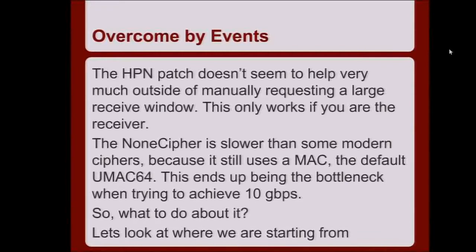However, the HPN patch doesn't help very much outside of manually requesting a larger receive window, and that only works on the receiving side. The none cipher, it turns out, is actually slower than some of the newer modern ciphers — which confused me greatly. The none cipher still uses a MAC, and the MAC it uses is UMAC-64. I read the paper for it — written in 2002 and benchmarked on a Pentium 2, described as 'super fast on a Pentium 2.' It turns out it's actually not that fast. When I was trying to test 10 gigabits, it was a very strong bottleneck.